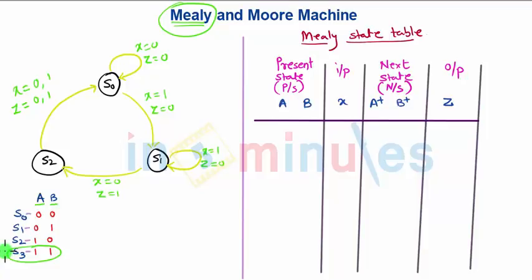Let us try to make the truth table or the Mealy state table for this graph. For the present input state, let us say that S0 is the reset state. I will make an arrow and whenever you turn on the circuit, it will start from state S0.